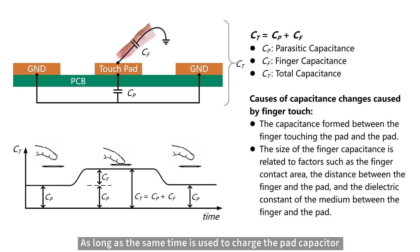As long as the same time is used to charge the pad capacitor, the ADC of microcontroller is used to collect the voltage value of the corresponding pad and compare it with the value when it is not touched. Then, the defined difference threshold can be used to identify whether the pad is touched.